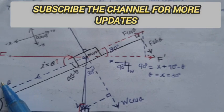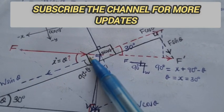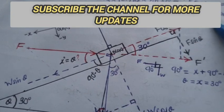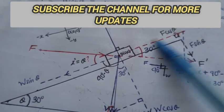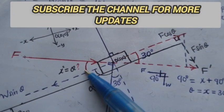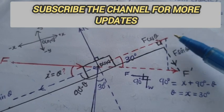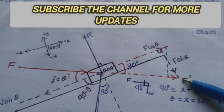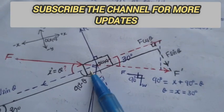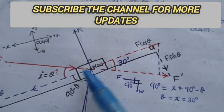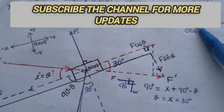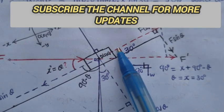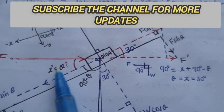We will have a component of this force F. This is the vertical component pointing downwards, and this is the horizontal component pointing towards the right of the plane. Let us assume this angle is equal to x. Then we know that from here to here it is 90 degrees angle between F and W.